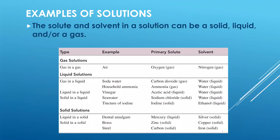We could have solutions where there are not just liquids and solids — there can also be gases. One example is air, which is a gas-in-gas solution. About 79% of air is nitrogen gas, so nitrogen is considered the solvent. Oxygen, at about 19%, is the primary solute. Air is a homogeneous mixture — it's clear and uniform throughout. You can't see the oxygen molecules, water vapor, or other trace gases in any particular corner.